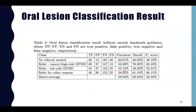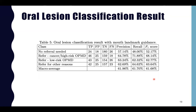In Table 4, the classification result without mouth landmark guidance achieves a precision of 58%, a recall of 56%, and an F1 score of 56.5%. In Table 5, the classification result with mouth landmark guidance achieves a precision of 61.96%, a recall of 61.7%, and an F1 score of 61.69%.